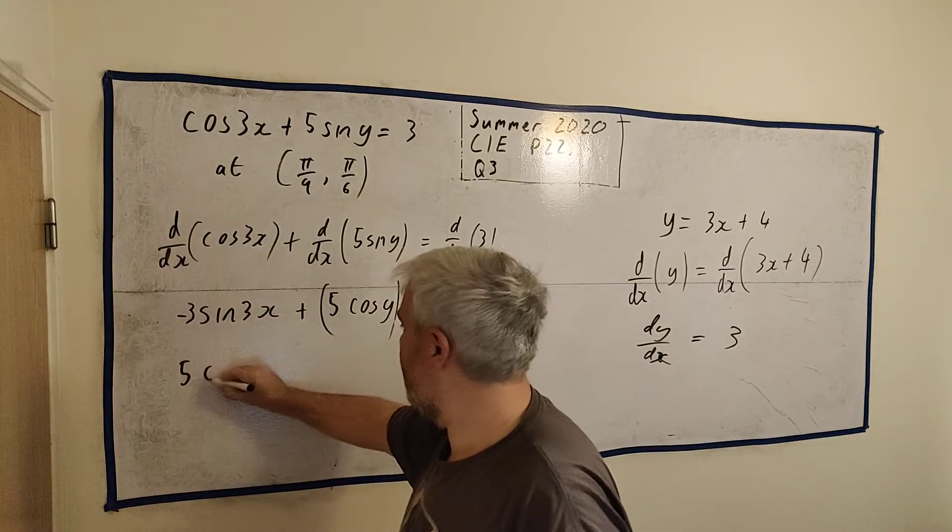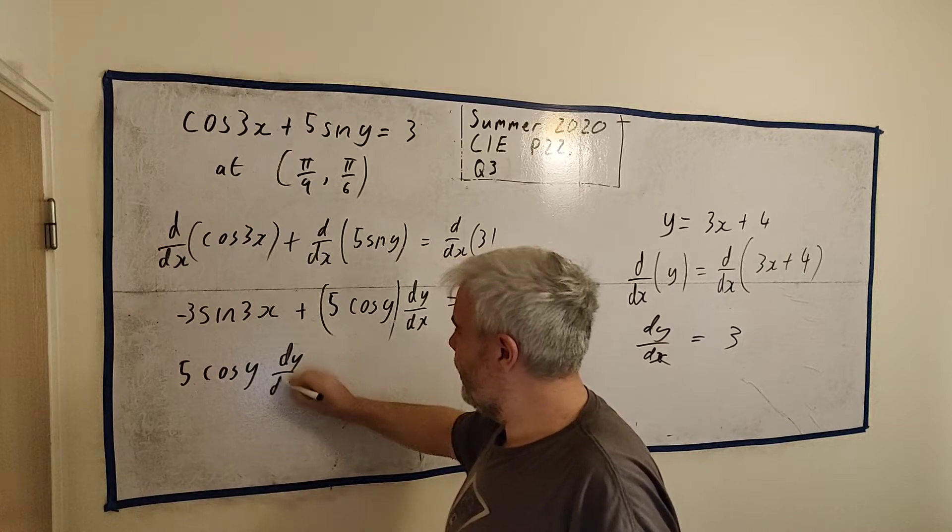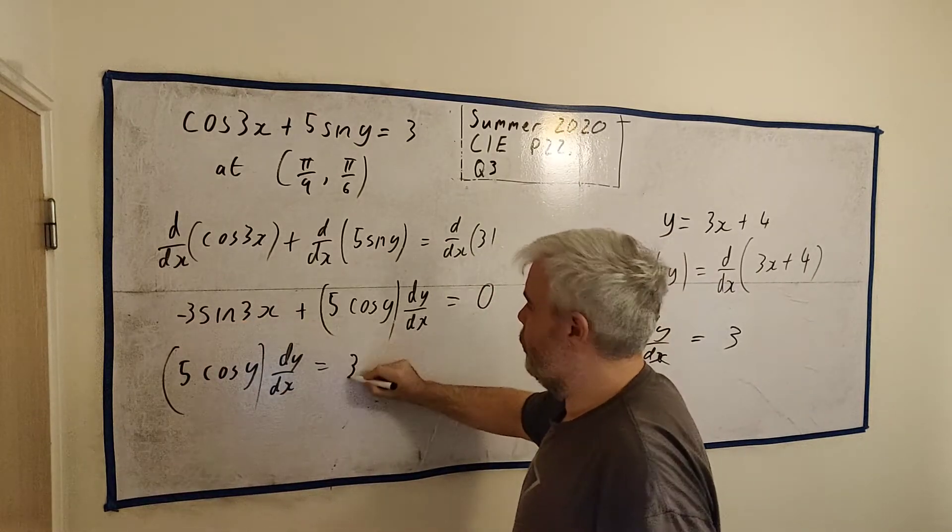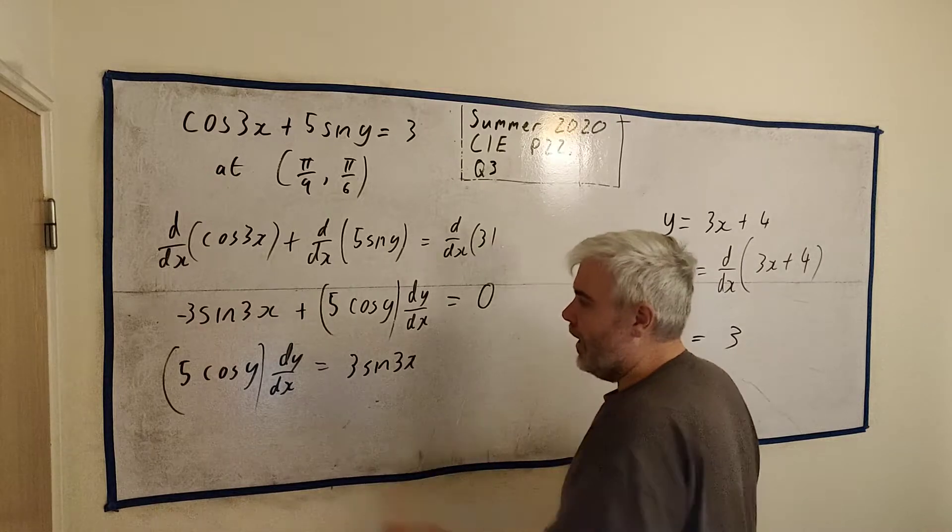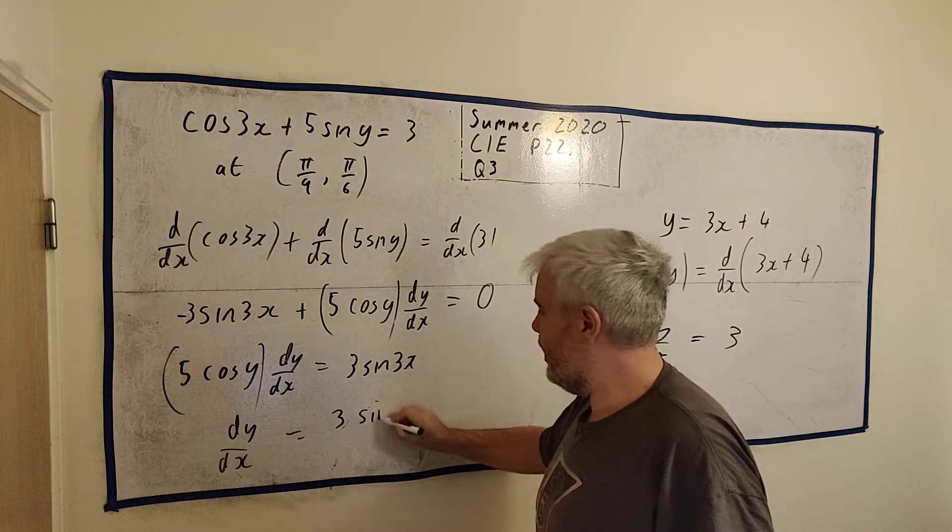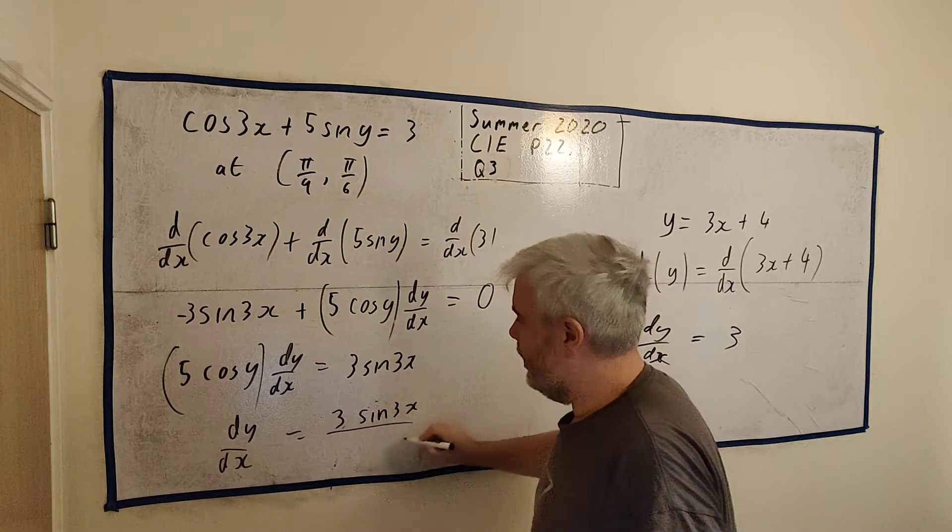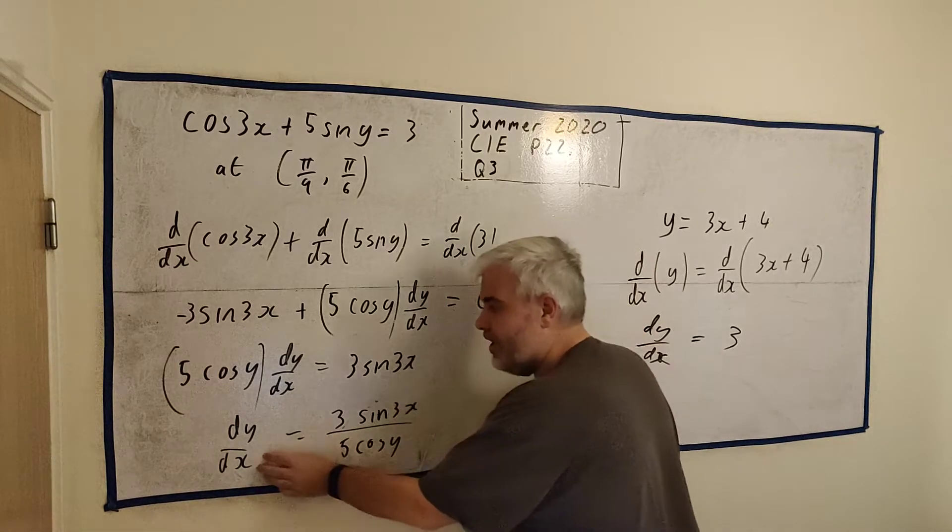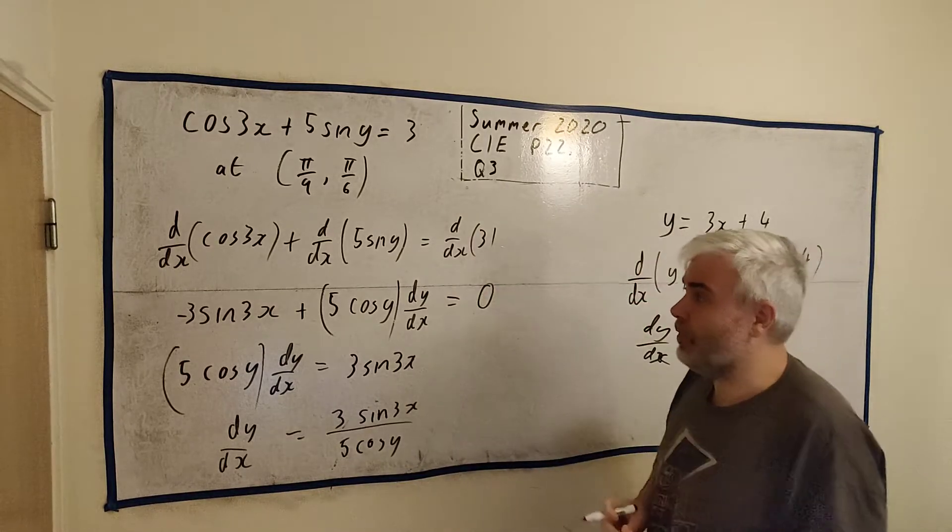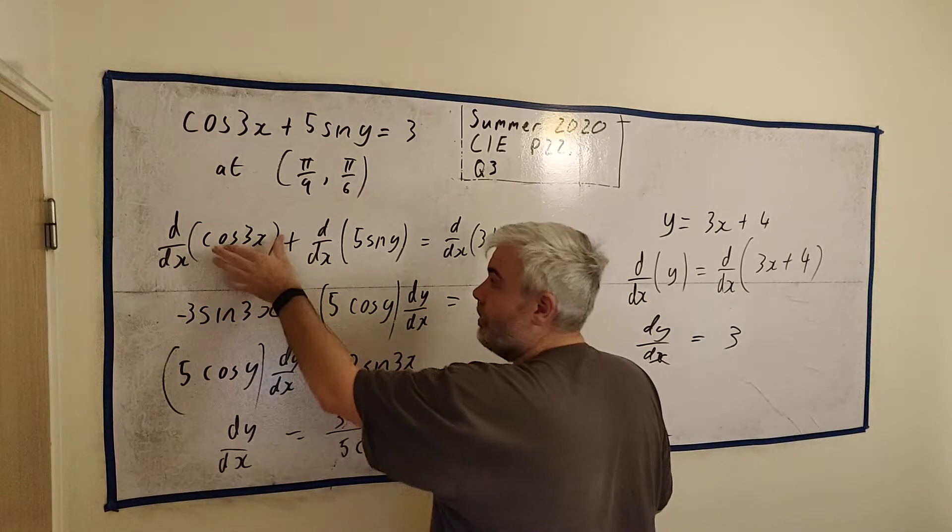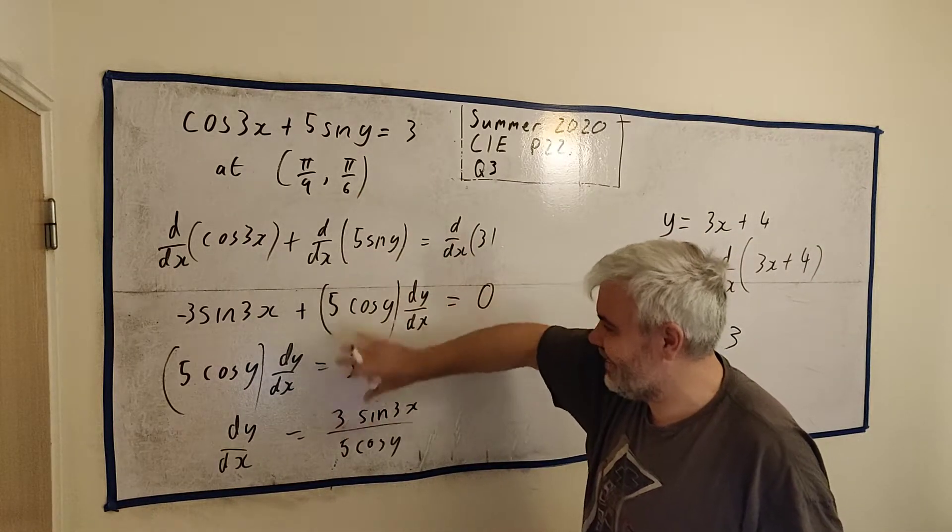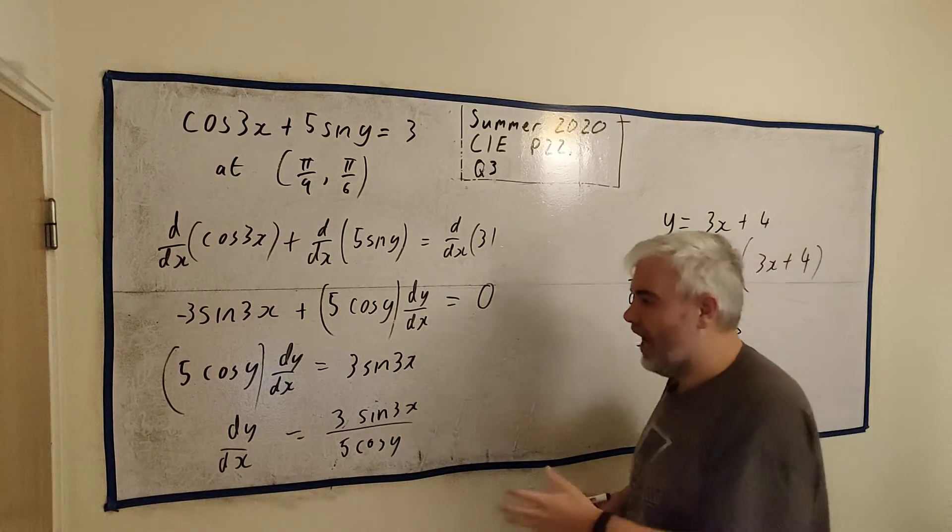So let's do that. Let's bring this guy over to the right. We get 5 cosine y dy/dx. It's equal to 0 plus this, 3 sine 3x. And we divide both sides by this. So we get dy/dx is equal to 3 sine 3x divided by 5 cosine y. So now we have a term for dy/dx. It was a little messier than before, but it wasn't impossible. You might have got straight from this line down to this line. So we have dy/dx.